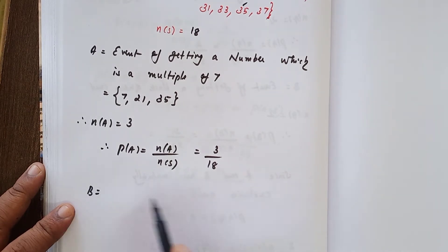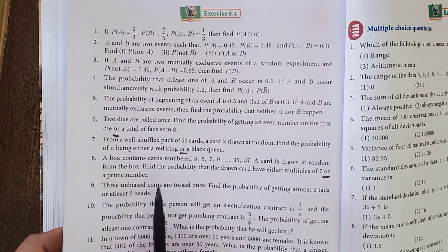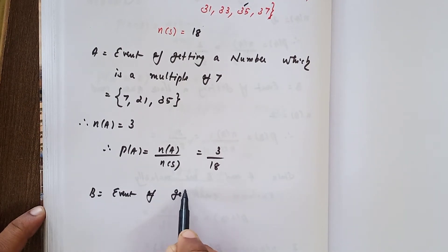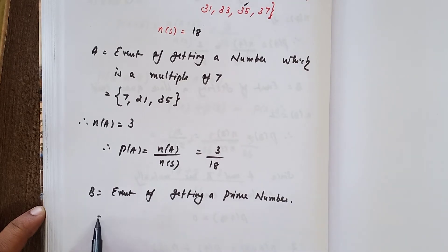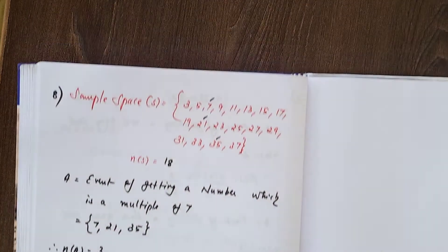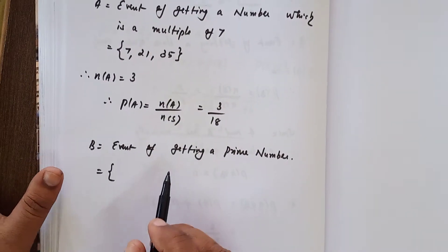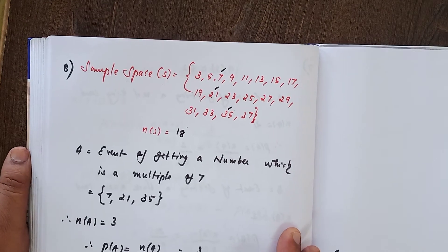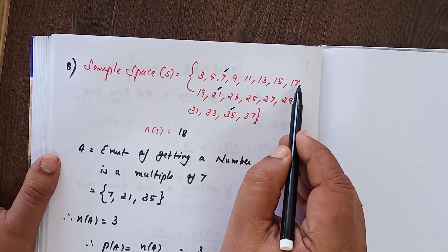Now B, that is equal to event of getting a prime number. So what are all the prime numbers in the sample space? 3 is a prime number, 5 is a prime number, 7 is a prime number. First write 3, 5, 7. Next, you know the prime number is a number which is divisible by 1 and itself. 9 is not a prime number, then 11, 13, 17. 15 is not a prime number.